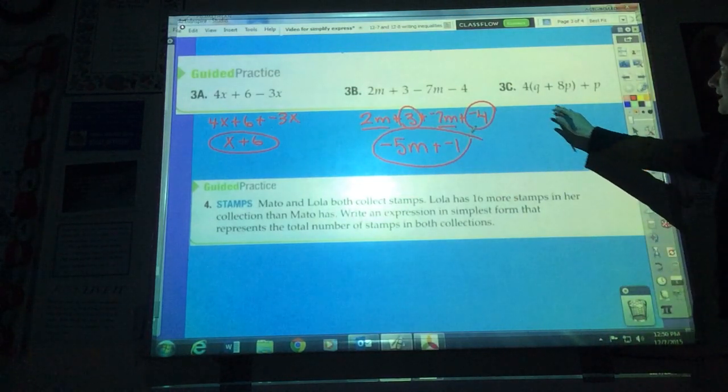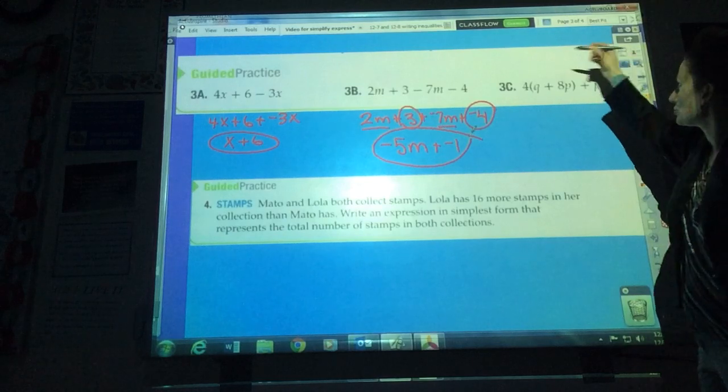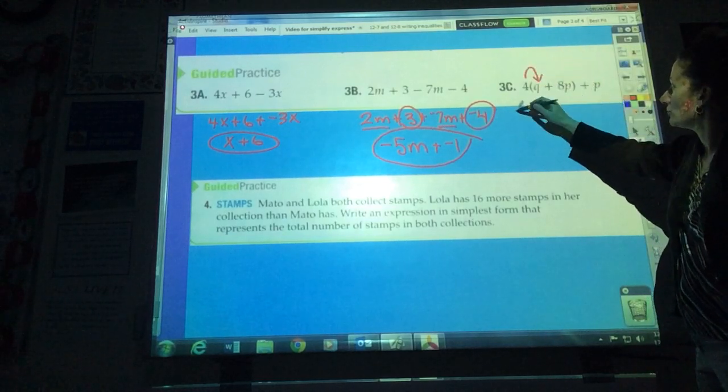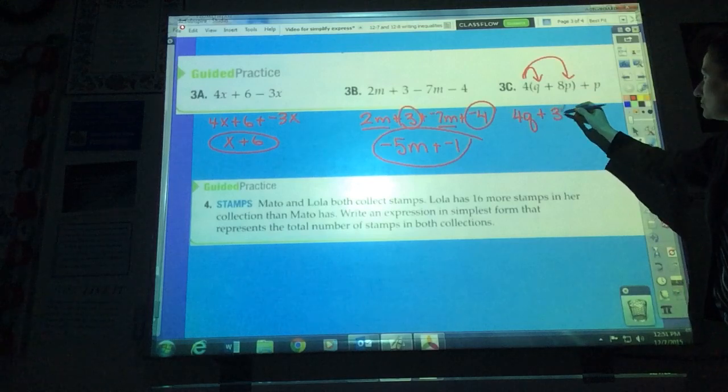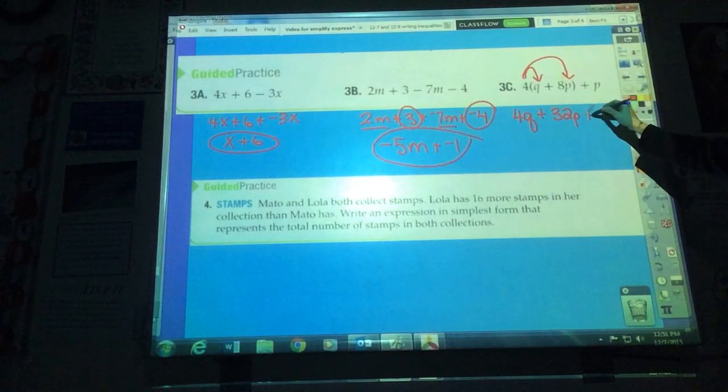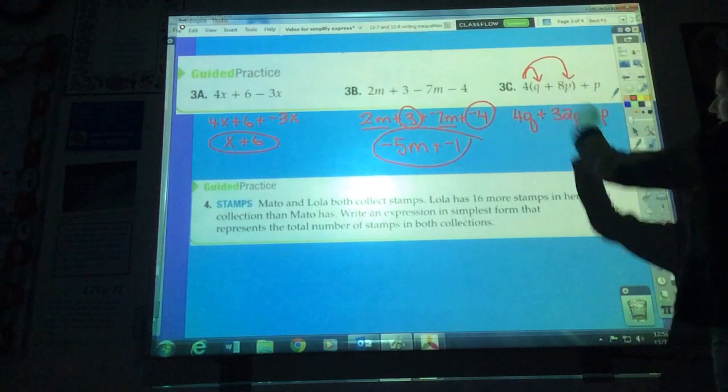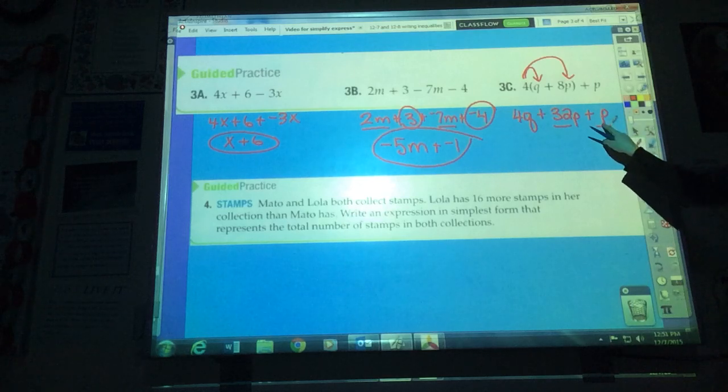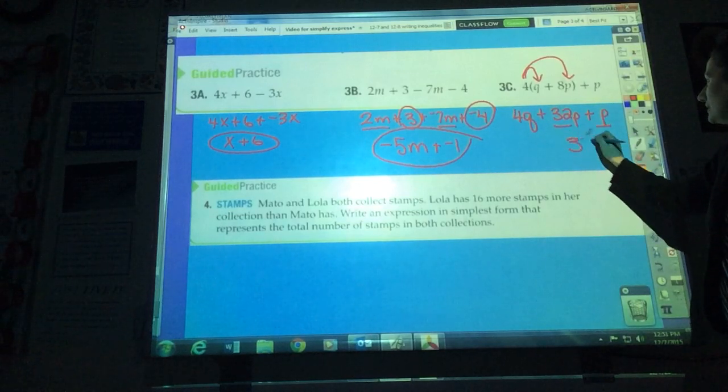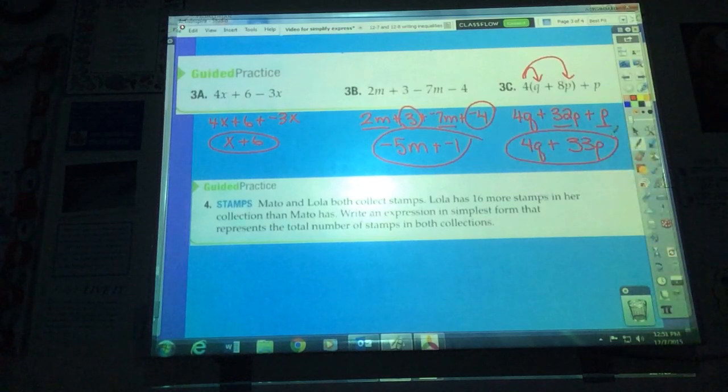Let's check this one. First step would be to rewrite it if I had any subtraction, but I don't. So I can jump to the second step, which is to rewrite it using distributive property. So 4 times q is 4q. 4 times 8p is 32p. And then this plus p over here is standing outside the parentheses. So I'm not going to do 4 times that, because that wasn't inside the parentheses. I can take the last step of combining like terms here. I've got 32p and what is that again? 1p. So 32p plus 1p, that would give me 33p. And I've got this 4q. 4q plus 33p is the final answer.